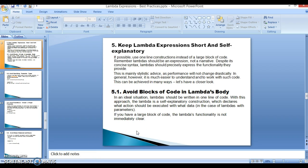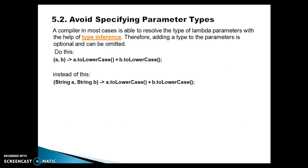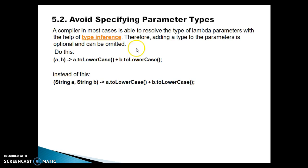Now let's move to the next point — that is 5.2: avoid specifying parameter types. A compiler, in most cases, is able to resolve the type of lambda expression parameters with the help of type inference. Therefore, adding the type to the parameter is optional and can be omitted.